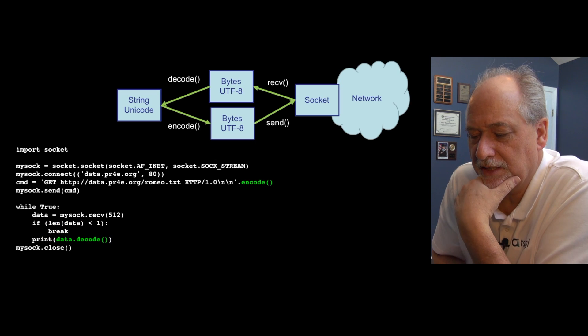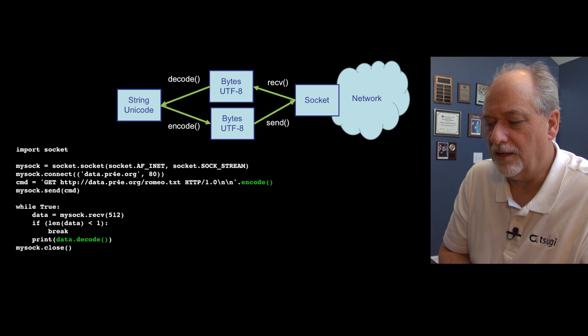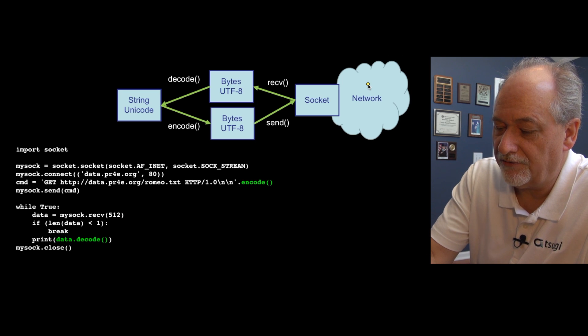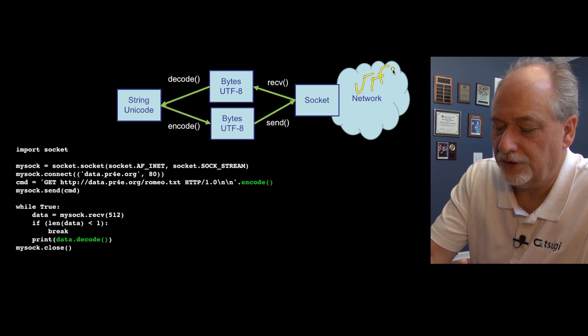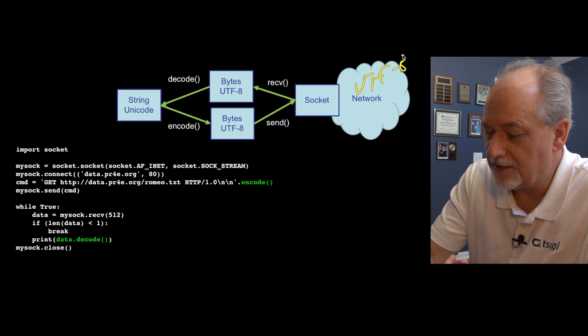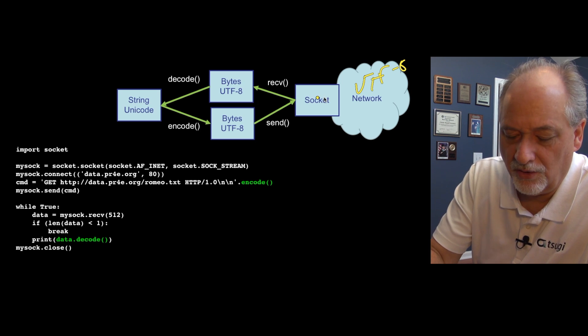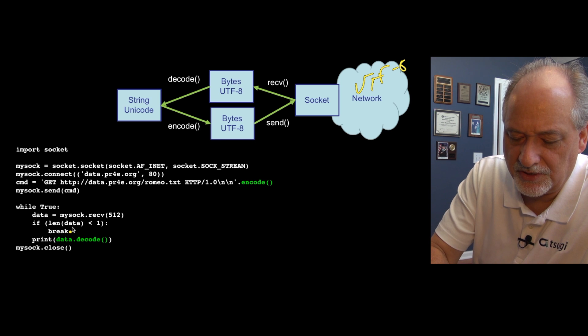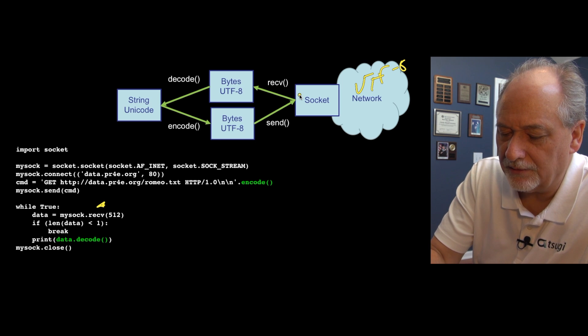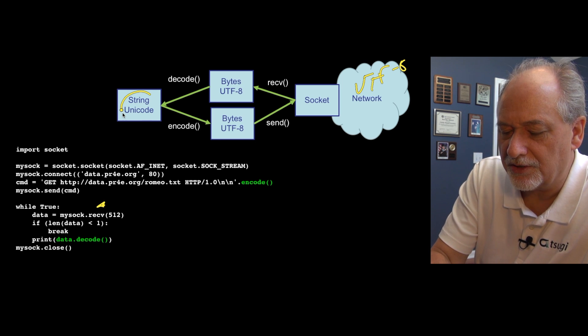So you can think of the process as this way. And that is the network has these UTF-8, mostly UTF-8 resources, not ASCII. If it's ASCII, it's okay. So you read with the receive. So this receive here pulls data. Well, we have a Unicode string, let's start with the send.